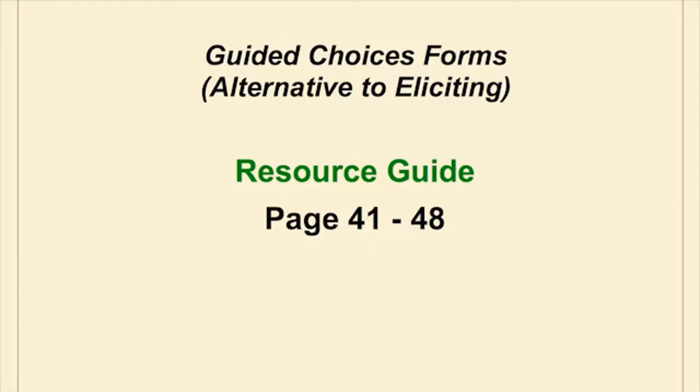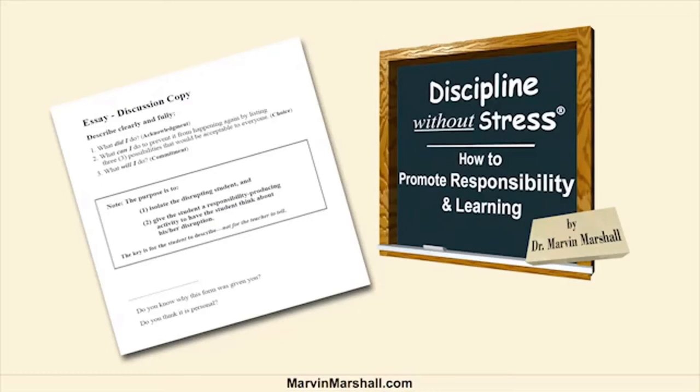For those who want something more tangible, I'll show you what I did when I first started out. Before eliciting, when a youngster acted inappropriately, I asked him what level he was on — the kid acknowledged it. I then gave him an essay, which is in your resource guide. The essay really did three things: I wanted the kid to acknowledge what he had done. I was not interested in how the writing was — I was just interested in whether the youngster accepted responsibility for what he had done.